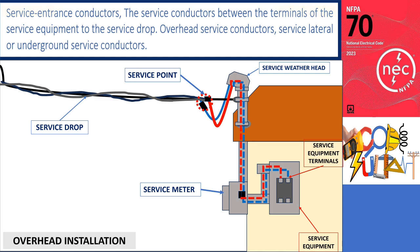How about service entrance conductors? These are the service conductors between the terminals of the service equipment and the service drop, overhead service conductors, service lateral, or underground service conductors. In the provided illustration, there is a depiction of a service entrance conductor that is connected, at the point of attachment, to service drop conductors. These conductors run down the side of the house, pass through the meter socket, and ultimately terminate at the service equipment.